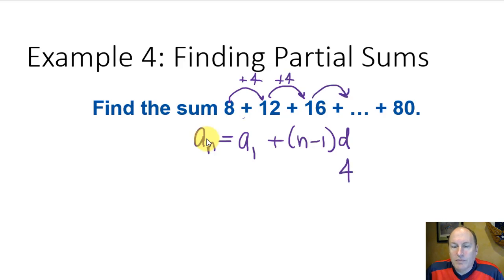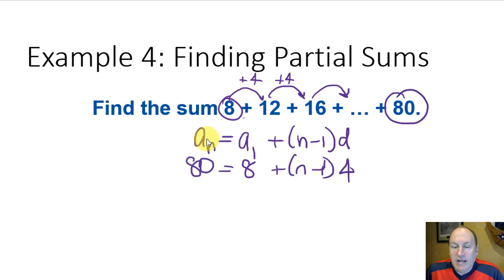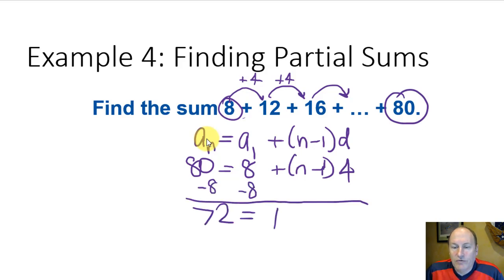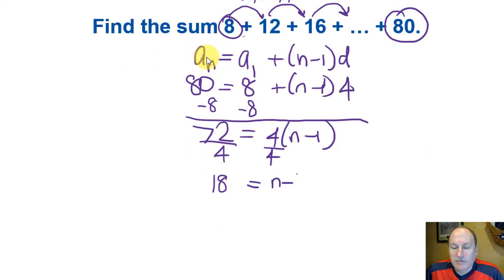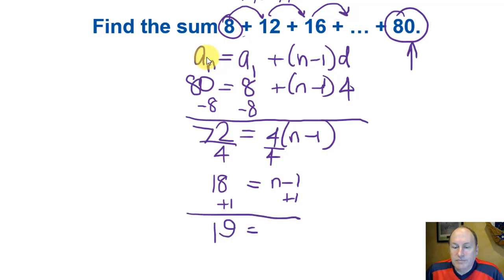Subtracting 8 gives 72 equals 4 times n minus 1. Dividing by 4: 18 equals n minus 1, so n equals 19. Therefore 80 is a sub 19 — this is the 19th term.